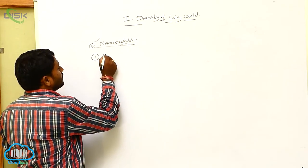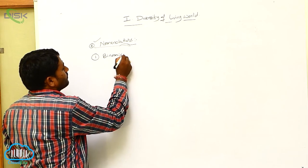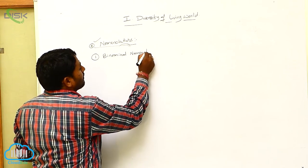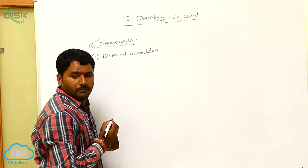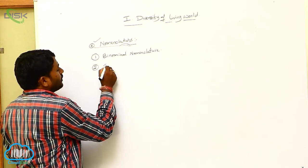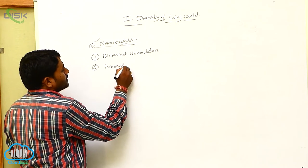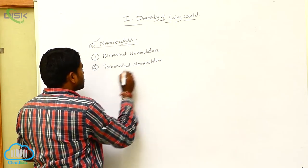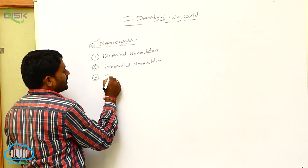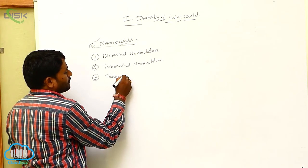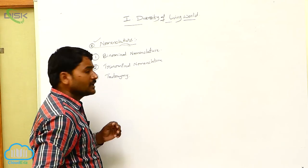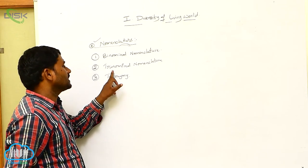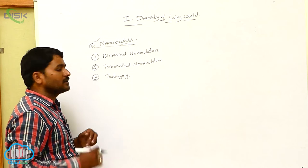The first type is binomial nomenclature. The second type is trinomial nomenclature. The third type of nomenclature is tautonomy. So these are the three different types of nomenclatures: first, binomial nomenclature; second, trinomial nomenclature; third, tautonomy.